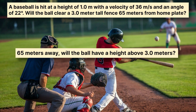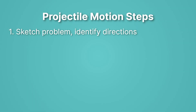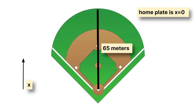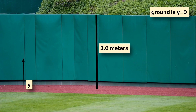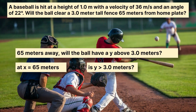What are the steps we'll use to solve this problem? The very first thing we need to do is sketch the problem and identify the directions. We're going to consider the horizontal direction — the x direction — to be the direction along the field from home plate to the wall. We know that goes about 65 meters, and we'll call home plate 0. For the vertical direction, the ground is considered 0 and the wall is going to be at 3 meters. So now we can put our question in terms of x and y: we want to know if at x equals 65 meters, is the y of that ball greater than 3 meters? If it's above 3 meters, that's a home run.